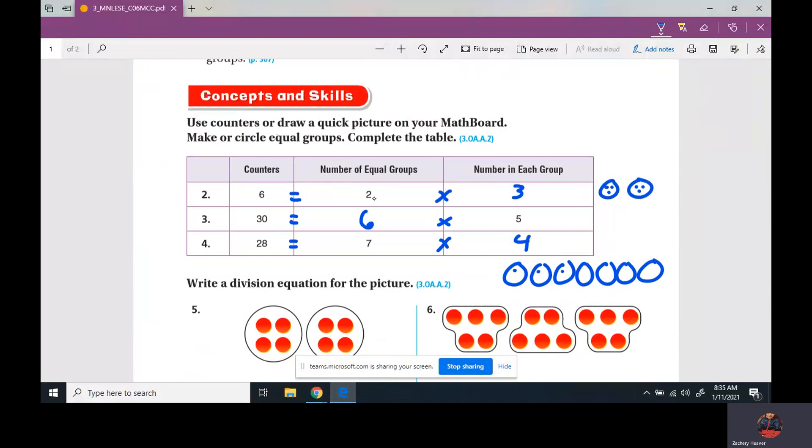Now we have 30 counters, so we'd have to draw 30 and circle five, and how many circles we'd have would be that. Same thing here, we have seven equal groups. Count to 28: 1, 2, 3, 4, 5, 6, 7, 8, 9, 10, 11, 12, 13, 14, 15, 16, 17, 18, 19, 20, 21, 22, 23, 24, 25, 26, 27, 28. And there's four in each group.